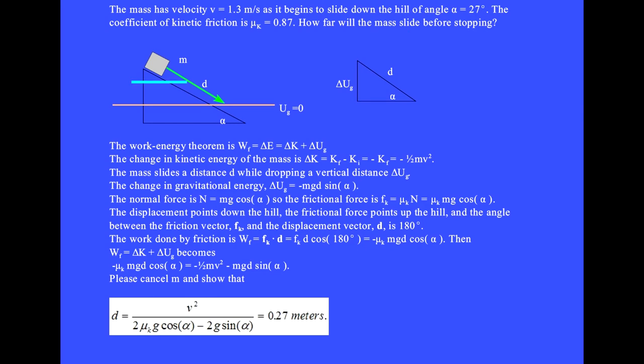The mass begins near the top of the incline and slides a distance d before stopping. We put Ug equals zero along the horizontal line which marks the lowest point in the motion of the mass. The work-energy theorem is: work done by friction equals the change in total mechanical energy of the mass, equals delta K plus delta Ug.